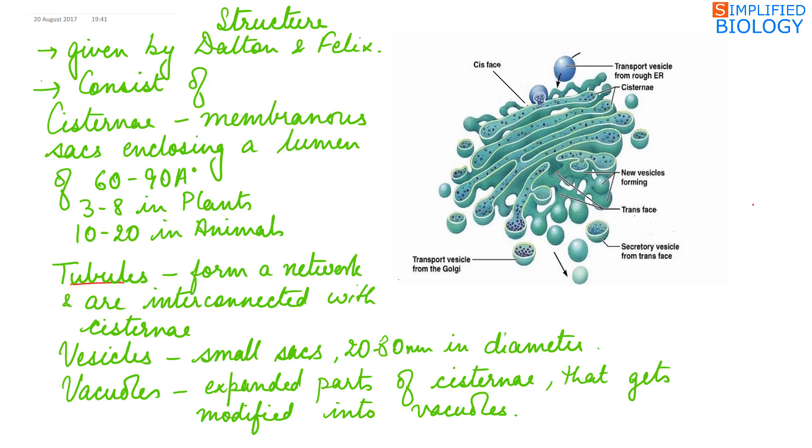Structure of Golgi complex was given by Dalton and Felix. It consists of cisternae, tubules, vesicles and vacuoles.